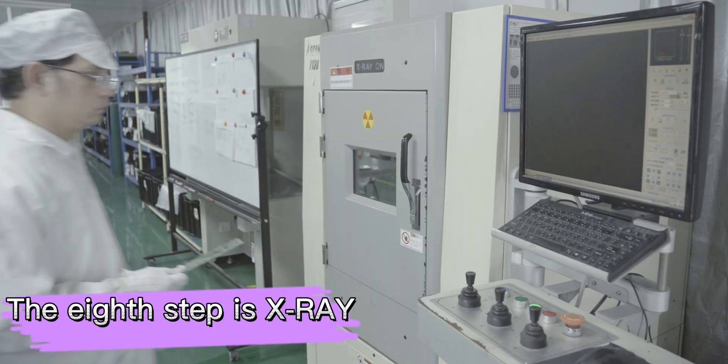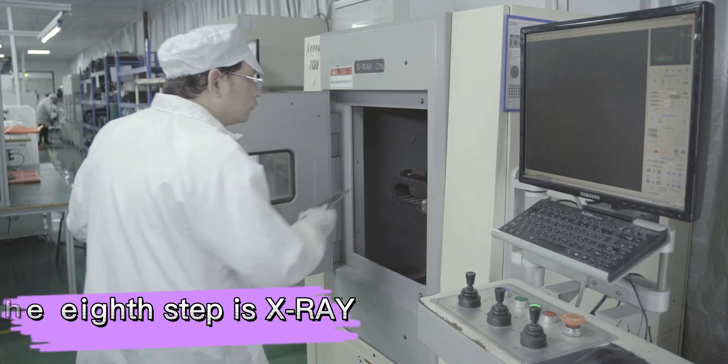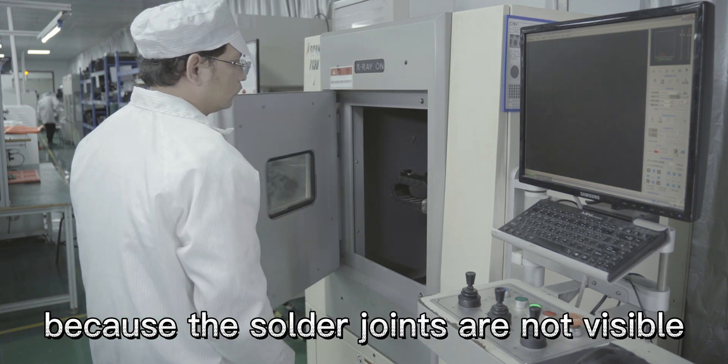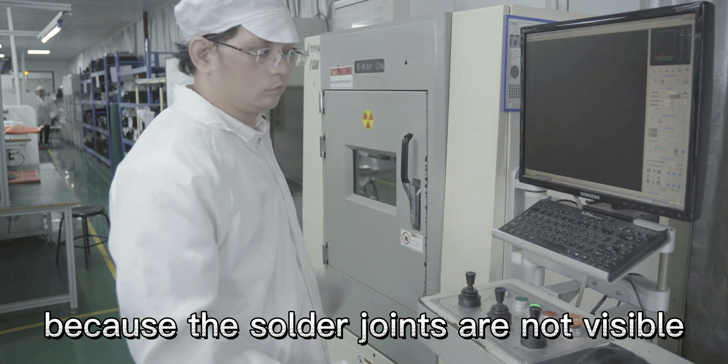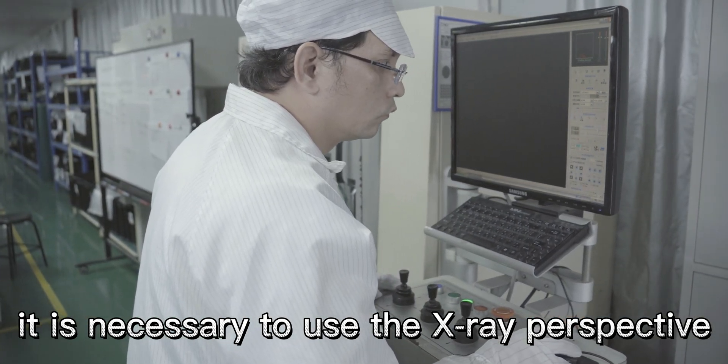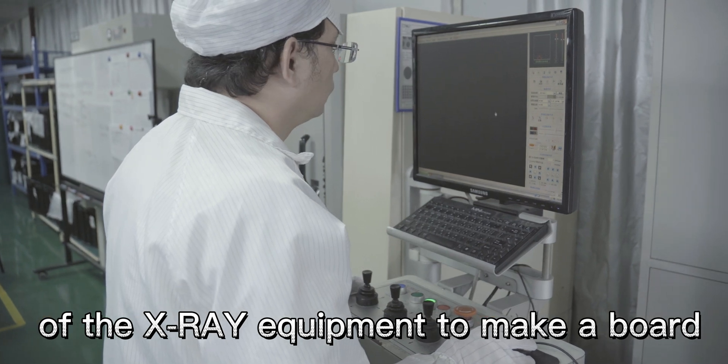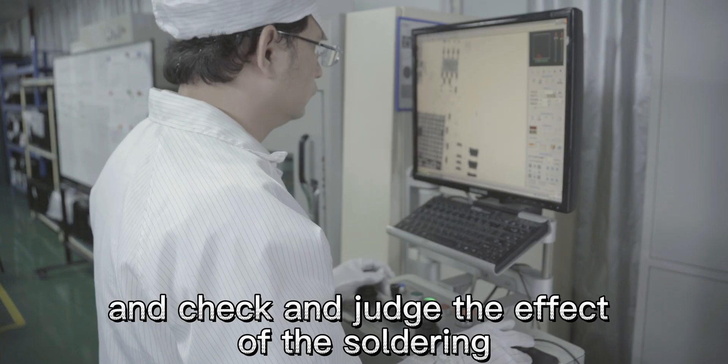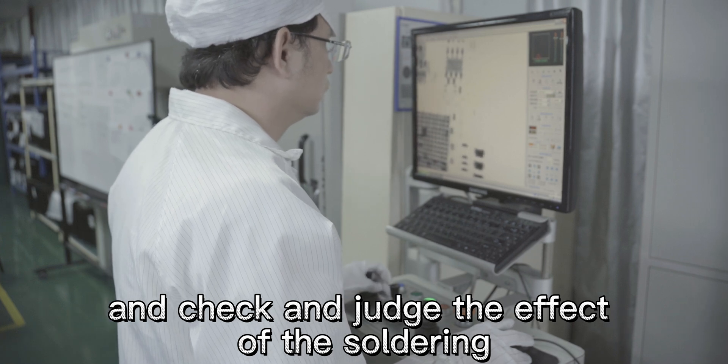The eighth step is X-ray. After soldering the PCB with BGA, because the solder joints are not visible, it is necessary to use the X-ray perspective of the X-ray equipment to perform layered imaging and check and judge the effect of the soldering.